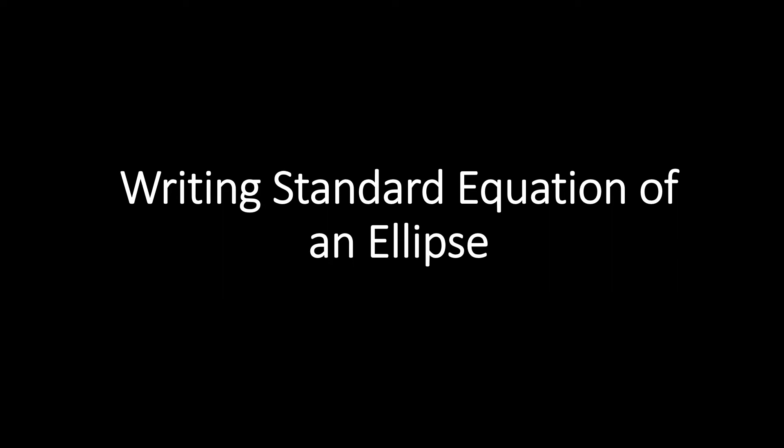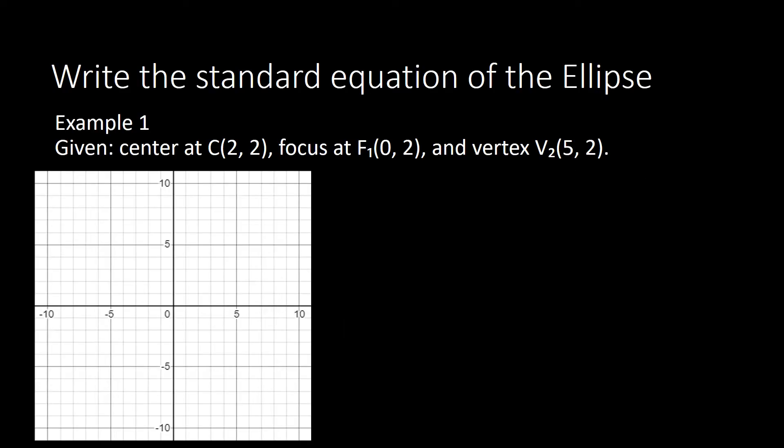This is your teacher Jenny and we'll talk about today writing the standard equation of an ellipse. Let us write the standard equation of the ellipse with a given center at (2,2), focus at (0,2), and vertex at (5,2). First we need the information of the center and then A and B if we want to write our standard equation.